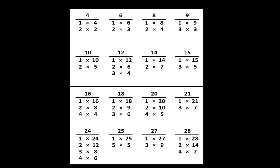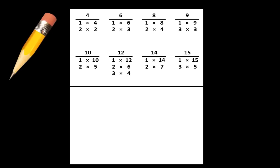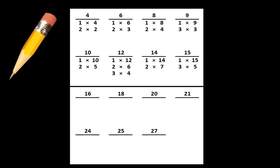Throughout this video, if you need more time at any point, simply pause the video and take as much time as you like. To prepare the paper, write these numbers and underline them too. Write 16 and underline it. Then write 18 and underline it. Now write 20, 21, 24, 25, 27, and 28.